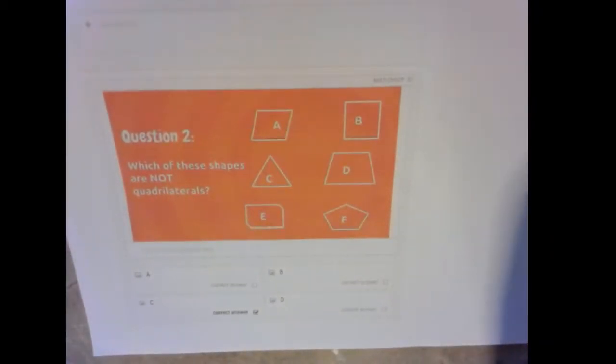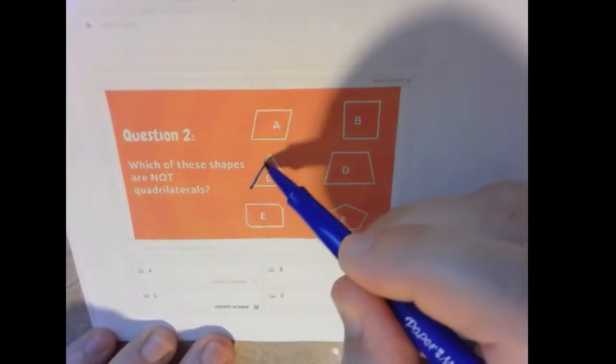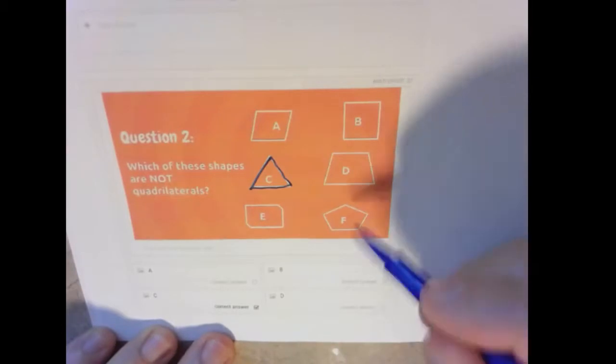All right, so which of these shapes are not quadrilaterals? So which of these shapes have something other than four sides? And this has three sides. This one has five.